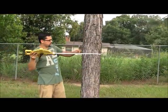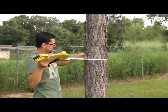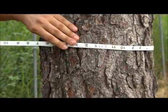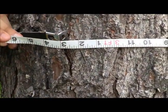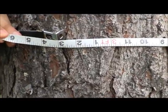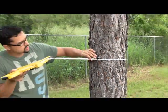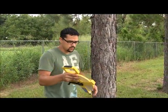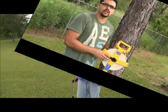Wrap the tape measure around, and we see our circumference is about three feet, four inches. So now we can take our circumference and use that to find our diameter, and we will show you how to do that when we get inside.